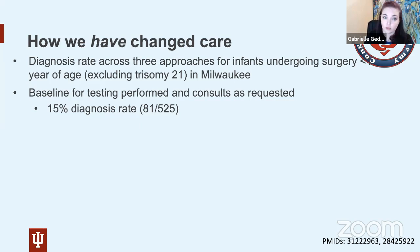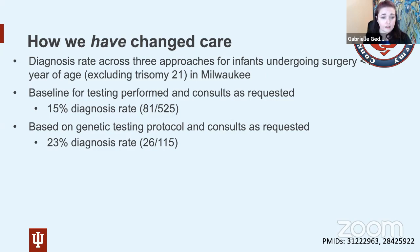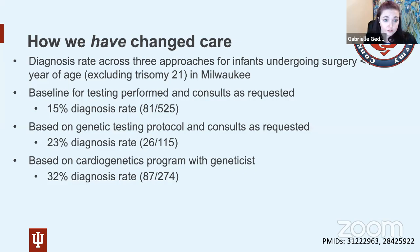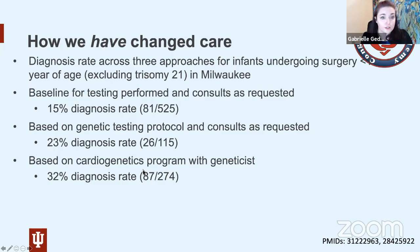When we instituted a genetic testing protocol to do arrays on all infants, we raised the diagnosis rate to 23% — just from the protocol alone. Then having protocolized genetic testing and protocolized assessment by a cardiovascular geneticist, our diagnosis rate went up to 32%: 87 individuals out of 274 — more diagnoses in about half the sample size compared to our original 525 patients. A huge difference from just standardizing and having medical geneticist assessment.